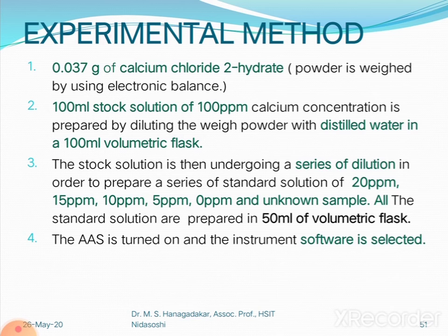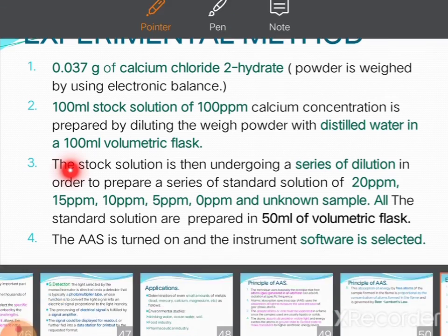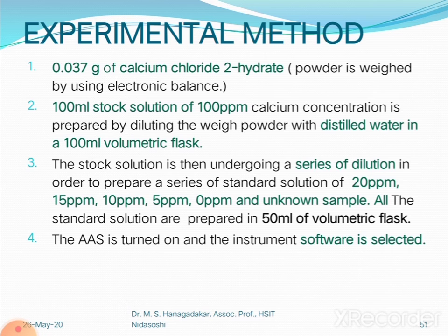The weighed quantity of salt is dissolved in a small amount of distilled water, transferred into a 100 ml volumetric flask, and diluted with distilled water to make the concentration 100 ppm. Step three: this stock solution is used for a series of dilutions to prepare standard solutions of decreasing concentration: 20 ppm, 15 ppm, 10 ppm, 5 ppm, 0 ppm, and an unknown sample.